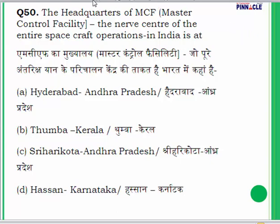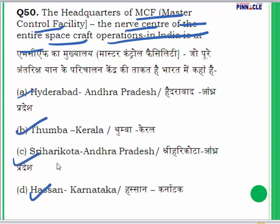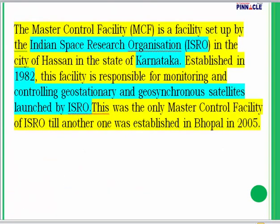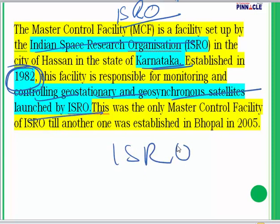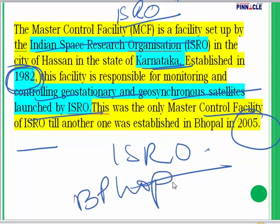Question 50: Where are the headquarters of the Master Control Facility (MCF), the nerve center of the entire spacecraft operations in India? The options are Hyderabad, Thumba, Sriharikota, or Hassan. The answer is D — Hassan, in Karnataka. The MCF is a facility set up by ISRO, established in the year 1982, and is responsible for monitoring and controlling geostationary and geosynchronous satellites launched by ISRO. This was the only MCF of ISRO until 2005, when another one was set up in Bhopal. That was the last question — best wishes to all.